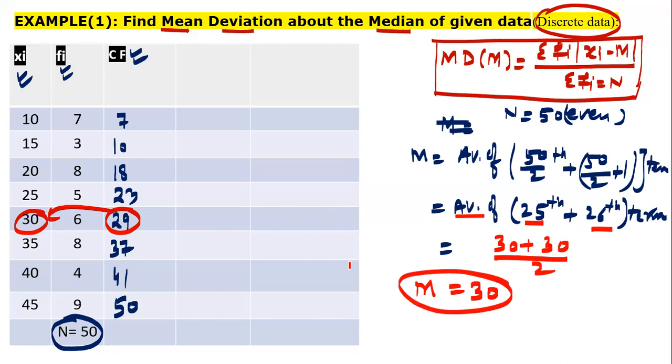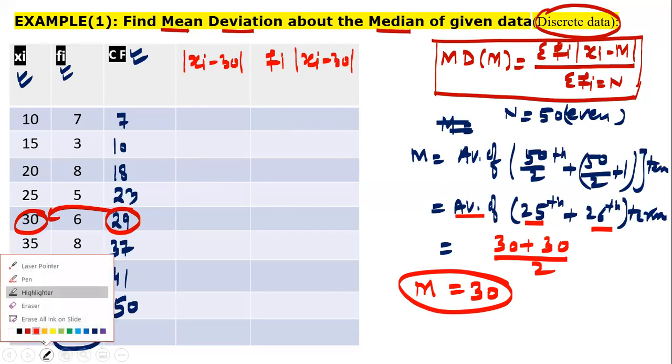So, next column will be absolute value of Xi minus 30. Next column will be Fi. And next would be Fi into Xi minus 30. We will make the table accordingly.